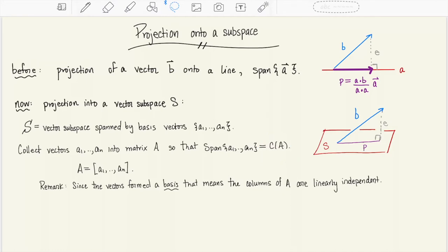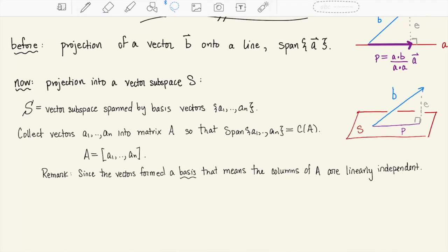So this is the way that we're formally going to describe our vector space S. Notice that the fact that the vectors a1 through an formed a basis for S means that those vectors are linearly independent. So the columns of A are also going to be linearly independent. We're going to need that fact in a moment.